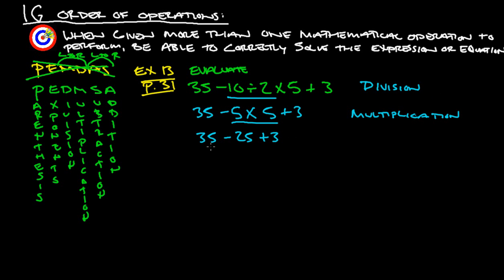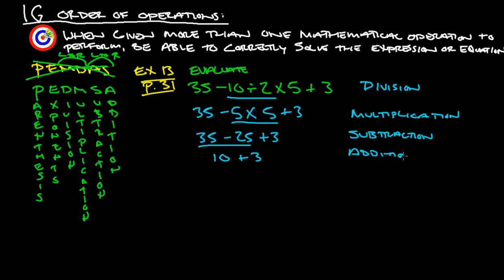Next, we do subtraction before addition: 35 minus 25 is 10. Then the last step is addition: 10 plus 3 gives us 13, and that's the correct answer.